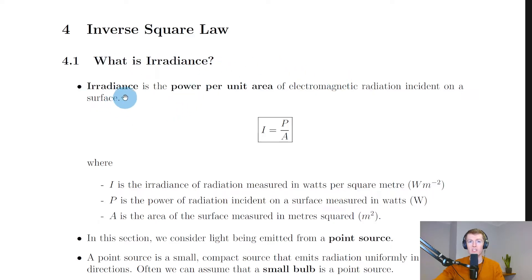So what is irradiance? Well, irradiance is the power per unit area of electromagnetic radiation incident on a surface. But a simpler way to think about irradiance is that it's kind of like an intensity or brightness of light. If light's got a higher intensity, then it's got a higher irradiance.